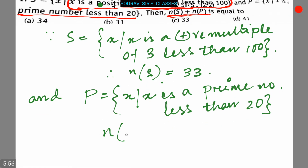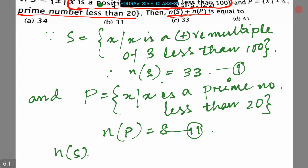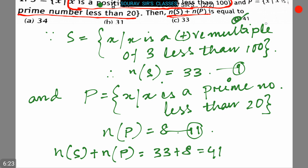n(P) is equal to 8. From this we can say that n(S) + n(P) is equal to 33 plus 8, which is equal to 41. So option D is the correct answer.